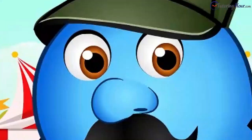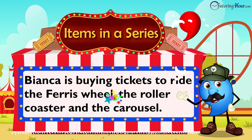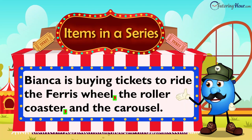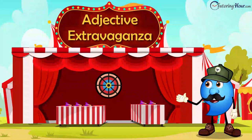Our first stop is in the items in the series tent. Take a look at this sentence strip. To separate these items, we need to use commas. Let's add them. Bianca is buying tickets to ride the Ferris wheel, the roller coaster, and the carousel. Easy peasy.